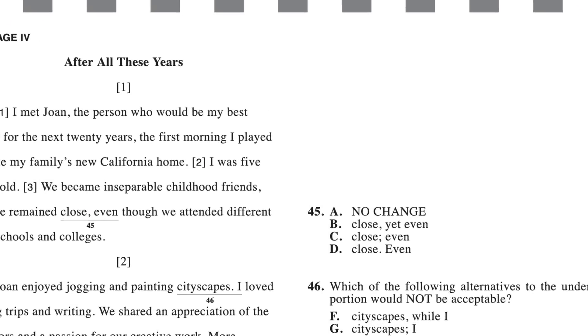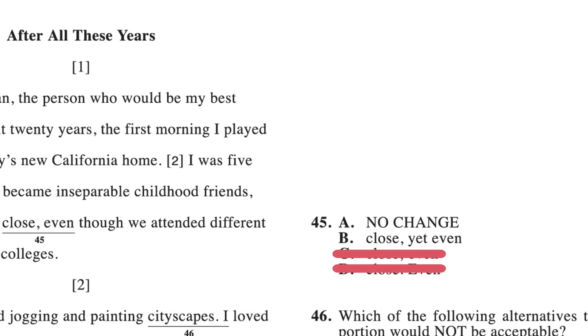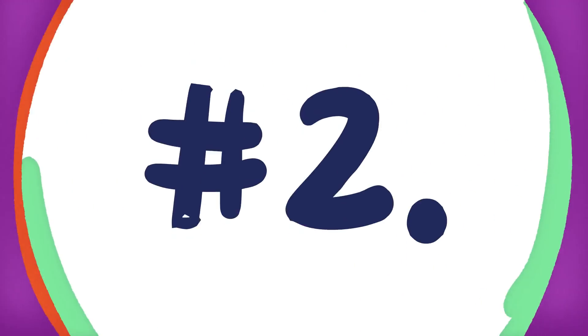So if you see a period and a semicolon — I'll show you a little example here — you know that neither of them are right because the ACT English section thinks of these as just two things that will join independent clauses. So if you see two, you know neither of them are right, unless there's other stuff going on in a sentence. But if nothing else is going on, neither of those can be right. You can eliminate both of them and have a much better chance of getting that question right.